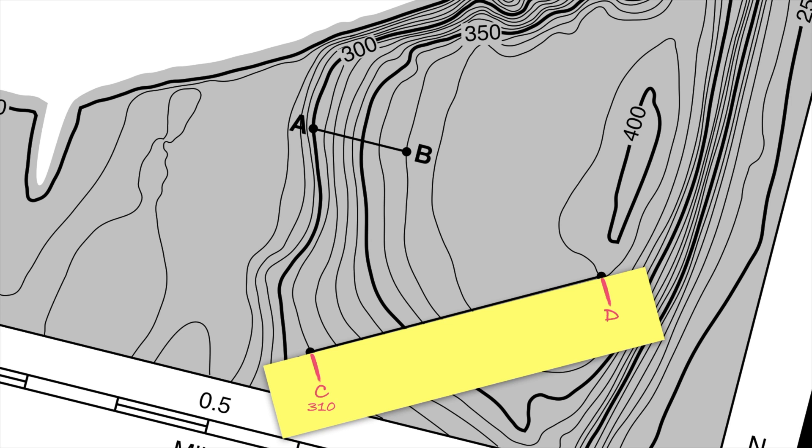Now, keeping my scrap paper perfectly in place, I'm going to transfer marks for each of the contour lines that cross my scrap paper, and I'm going to be sure to include the elevation of each of those lines.